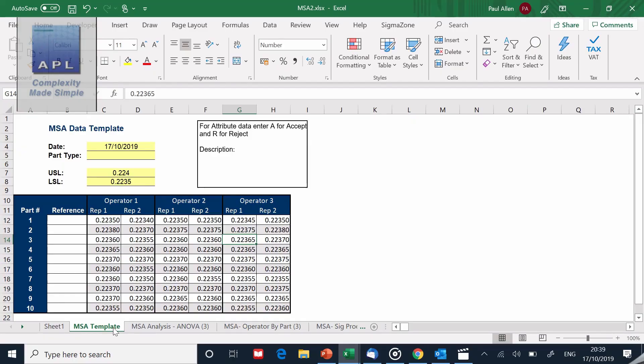So here's the MSA table. You can see the data, we've got three operators, we've got 10 parts, and we measured the part twice. Each part has been measured twice. We are measuring in inches so you can see that some of the measurements we go down to ten thousandths of an inch, we go down to hundred thousandths of an inch. And this was the first MSA, three operators.